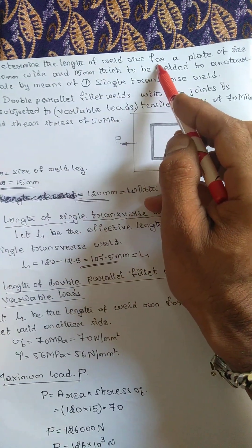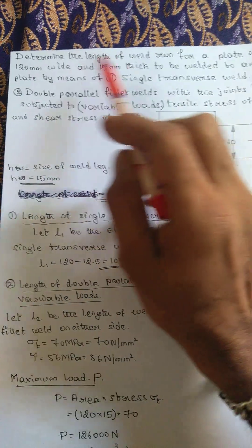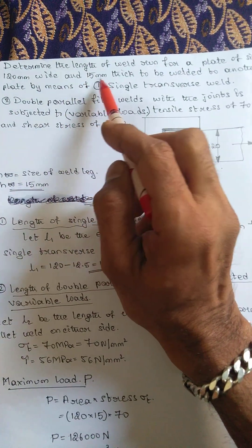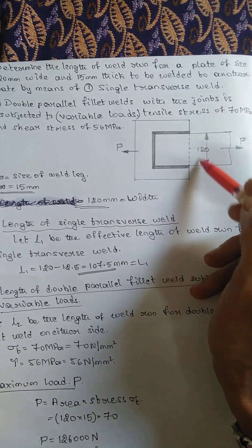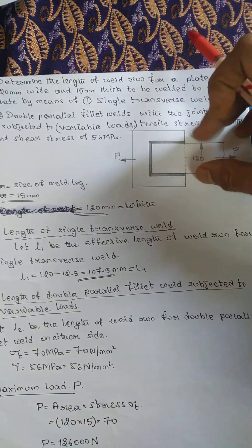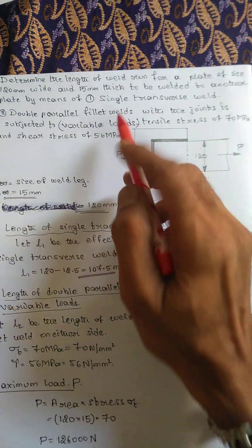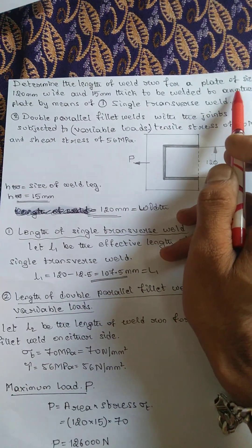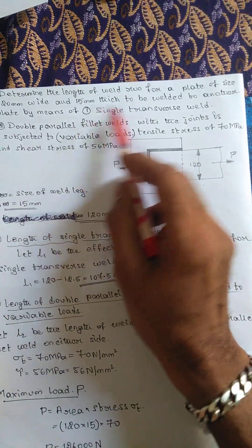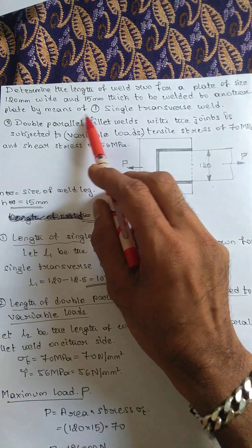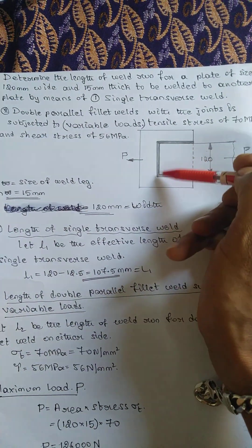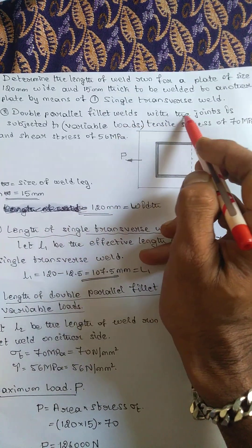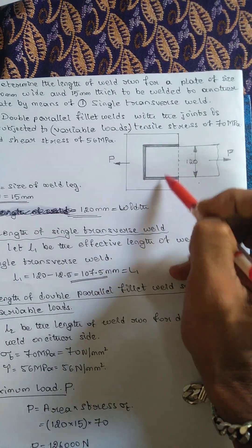Determine the length of weld run for a plate of size 120 millimeter wide and 15 millimeter thick. This is width of the plate or length of weld which I have to carry out, welded to another plate by means of single transverse weld and double parallel fillet weld.